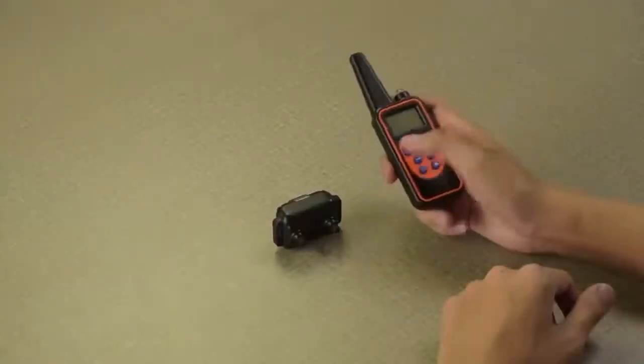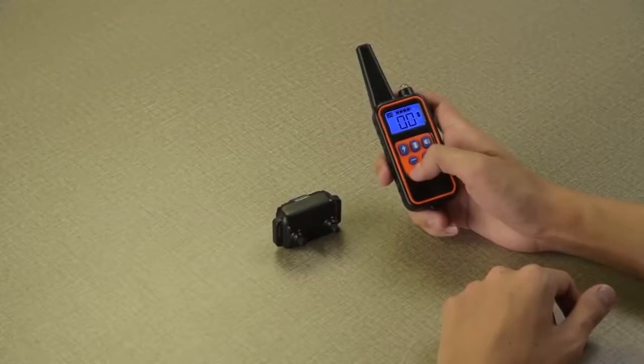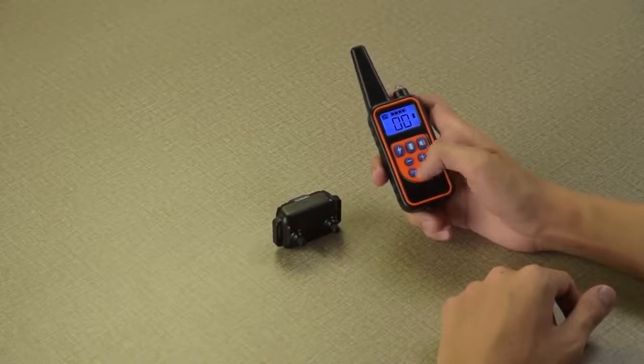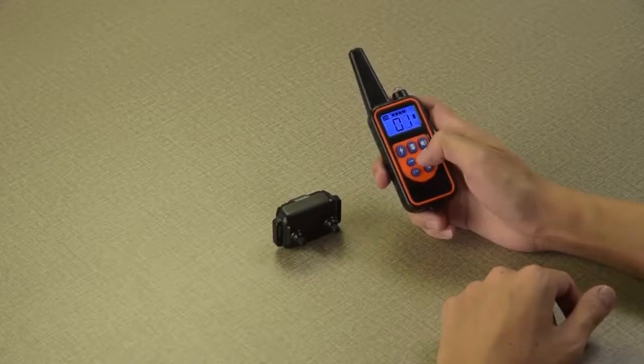Turn on the remote by pressing the shock or vibration button, and then choose a channel: CH1, CH2, or CH3 by pressing the CH button.